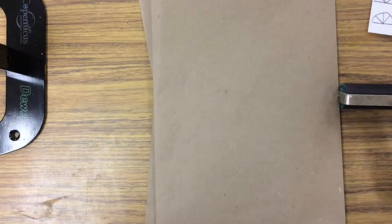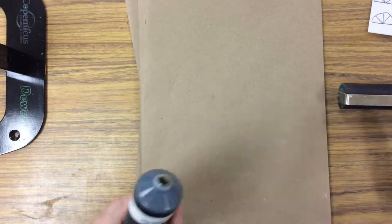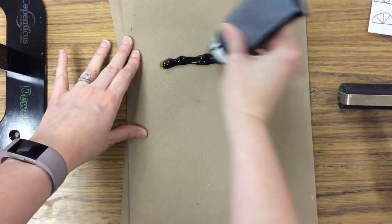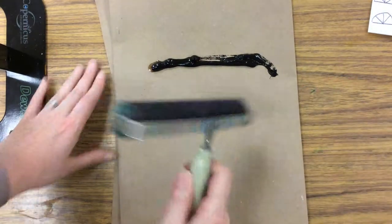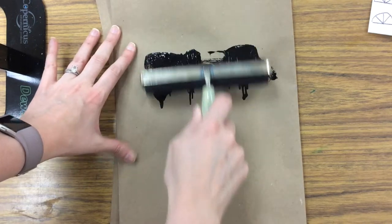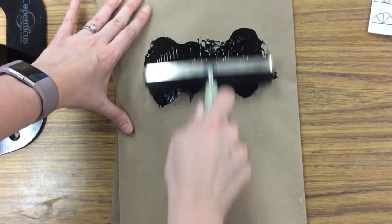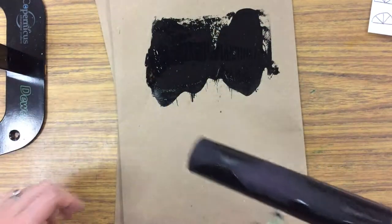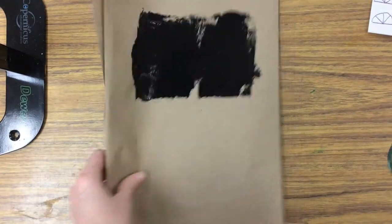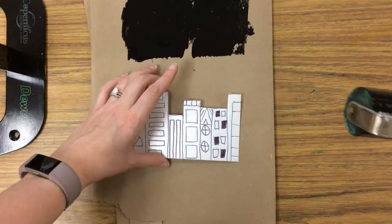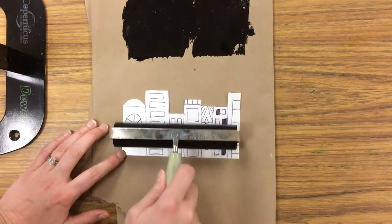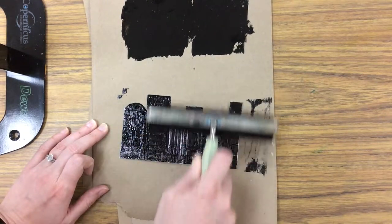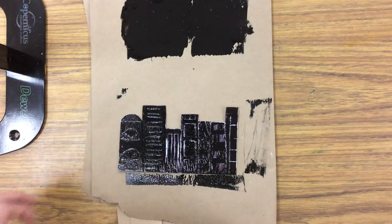For our printing we're going to take some black printing ink and I'm just going to put sort of a thin stripe of it down. I'm then going to take my brayer, which is kind of like a mini paint roller if you've ever painted walls at home. It's made of rubber and I'm going to try to just coat my brayer with the black ink. Then I'm going to put down my styrofoam plate and just roll that ink onto here, trying to give it a good coating.